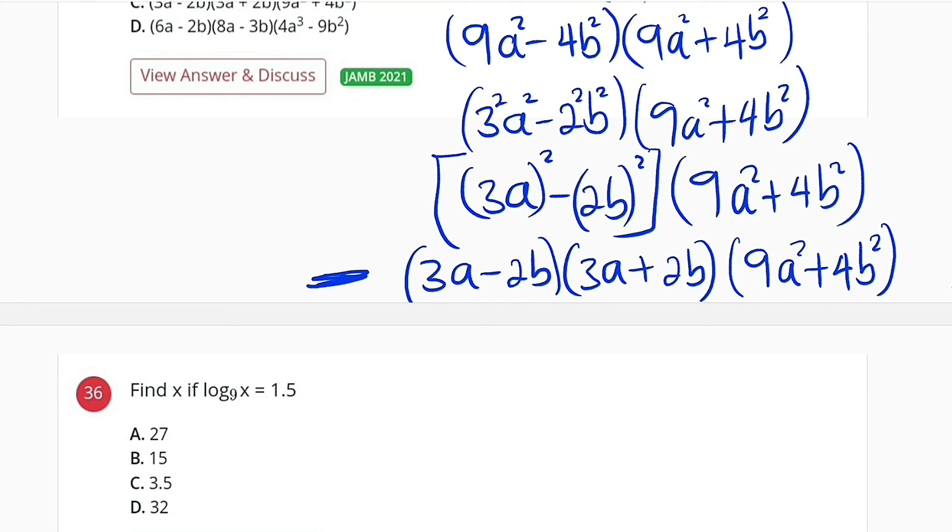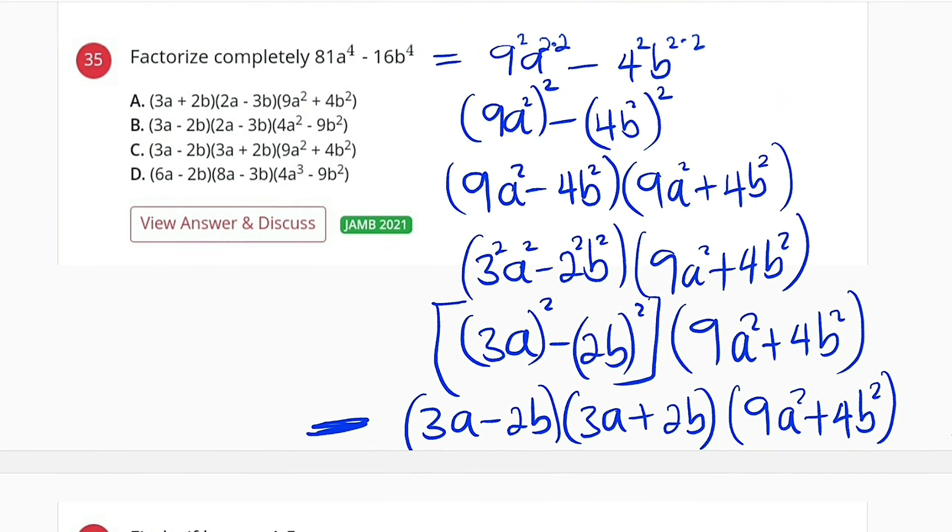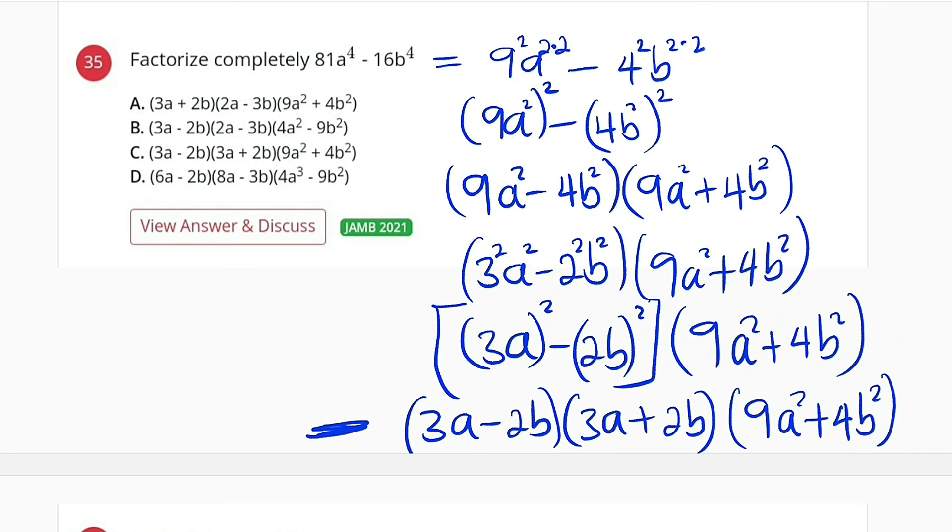Let us look through the options. We have 3a minus 2b, yes, we have something like that here: 3a minus 2b times 3a plus 2b, and finally 9a squared plus 4b squared. So option C is the right option.